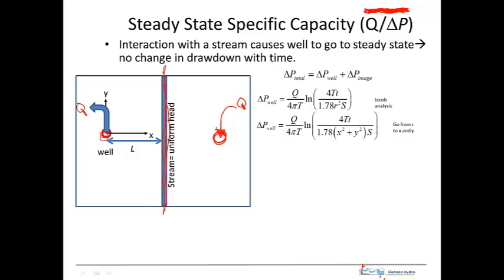This analysis is only valid for the region on the pumping well side; it's not valid on the other side because the image well doesn't really exist. It's a way of taking a simple infinite-aquifer analysis and turning it into one that evaluates the effects of a constant-head boundary representing a stream. The total drawdown equals the actual drawdown from the pumping well plus the drawdown from the image well.